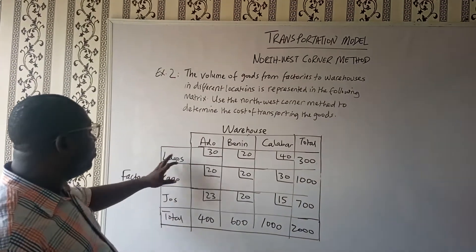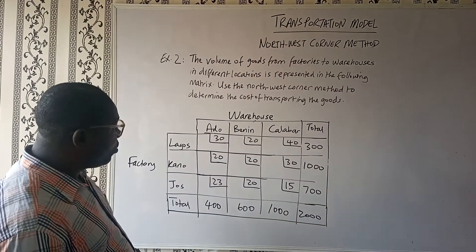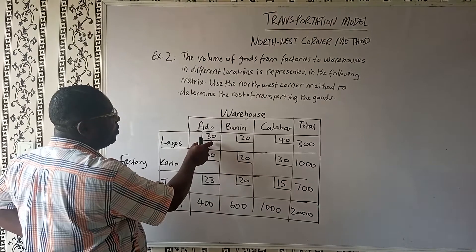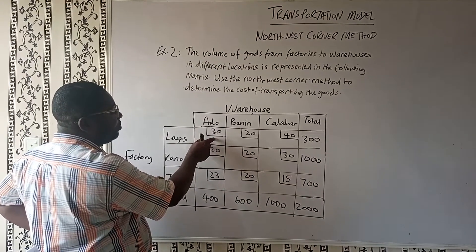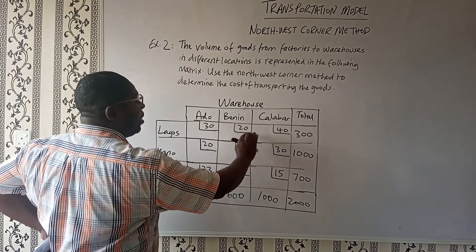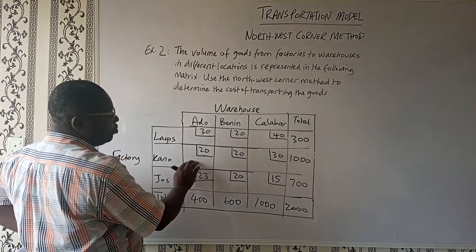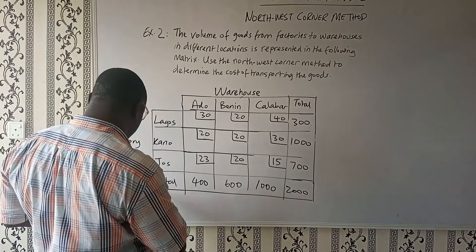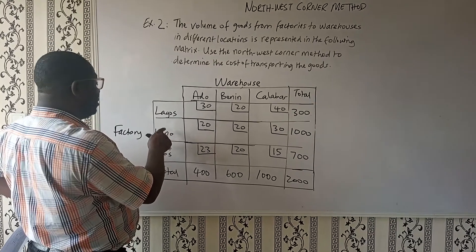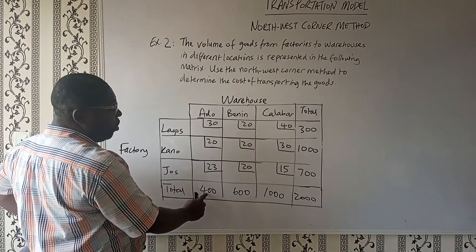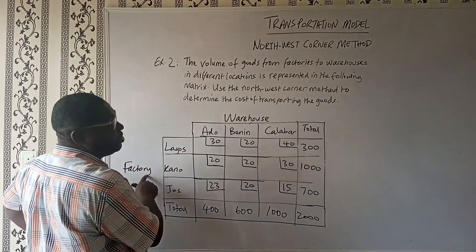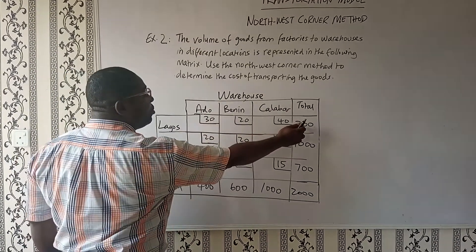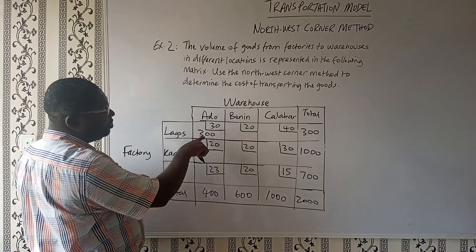Now we have our factories, and we have the warehouses at Ado, Benin, and Calabar. From this question, you'll see that we have a demand of 400. The North West Corner method starts from the top left corner of your matrix and you move from left to right until all the cells in a row are filled, before moving to the next row to fill all the cells, and then the next row. That's the movement we are going to achieve.